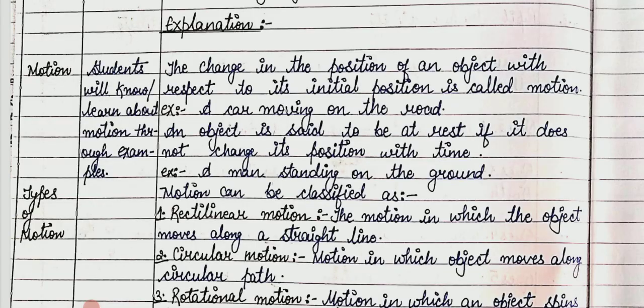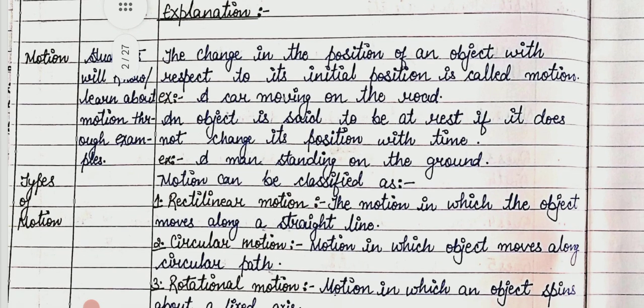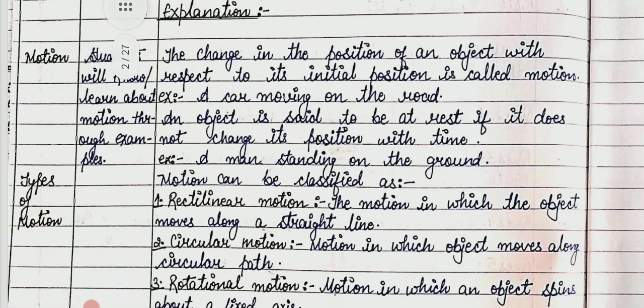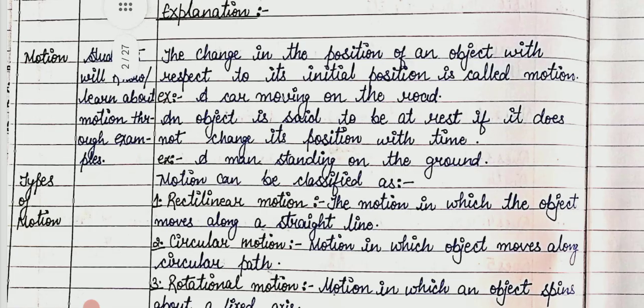The change in the position of an object with respect to its initial position is called motion. Example: a car moving on the road. An object is said to be at rest if it does not change its position with time. Example: a man standing on the ground.